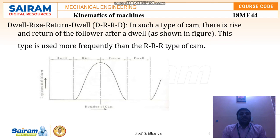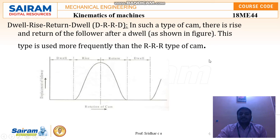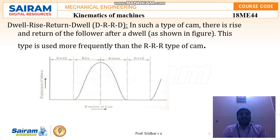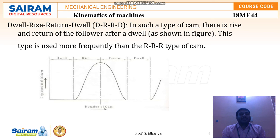The next pattern is Dwell-Rise-Return-Dwell (D-R-R-D). Initially the follower is in dwell (rest condition), then it rises, then returns, then again enters dwell. The cycle repeats: dwell, rise, return, dwell. In this type there is a rise and return of the follower after the dwell. This type of CAM is more commonly used in industries compared to the Rise-Return-Rise type which had no dwell.